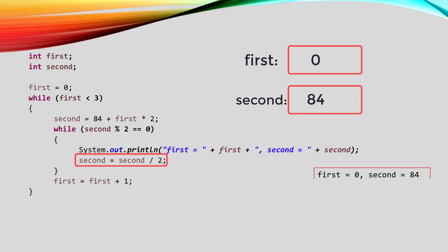This statement is going to do integer division, dividing second by two, so 84 divided by two is 42, and it's going to store that into second. So now we are at the end of the inner loop, so it goes back up to the beginning of the inner loop.